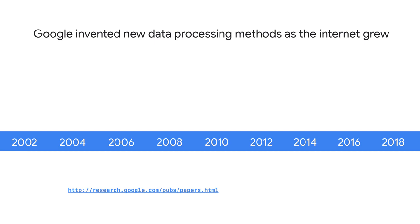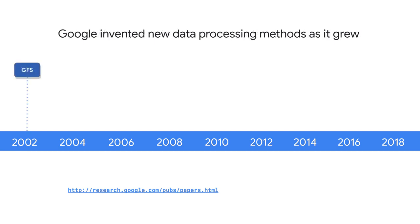As the internet grew, Google invented new data processing methods. In 2002, Google created GFS, or the Google File System, to handle sharding and storing petabytes of data at scale. GFS is a foundation for Cloud Storage, and also for what would become BigQuery-managed storage.